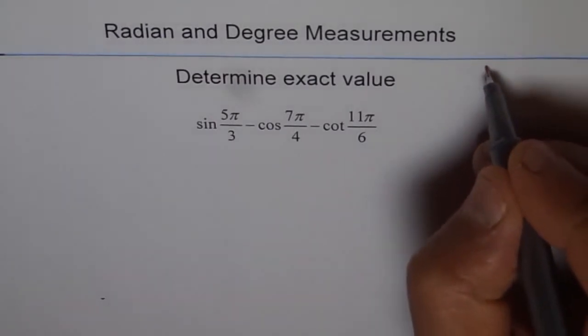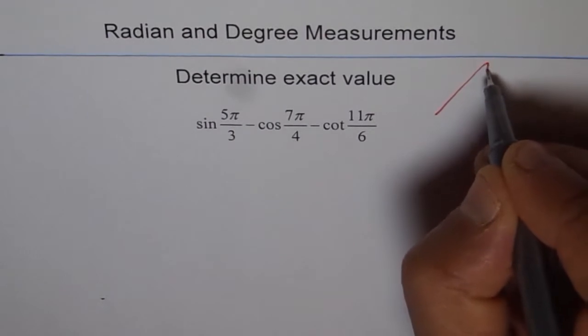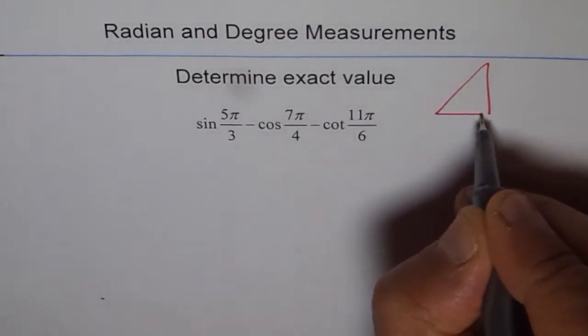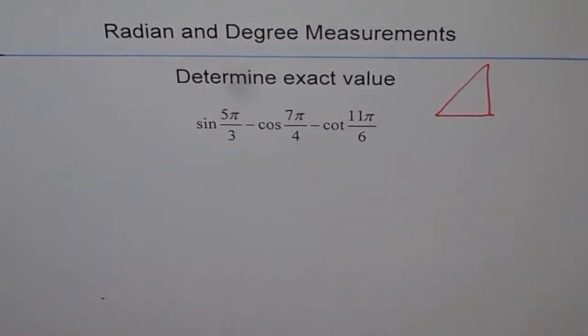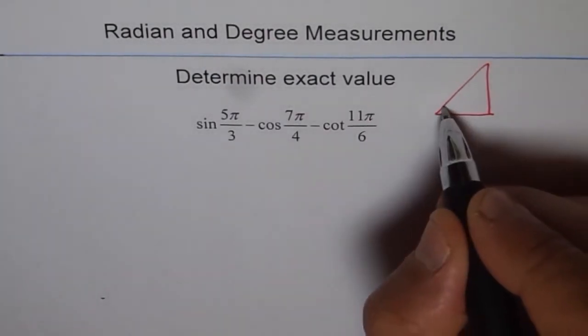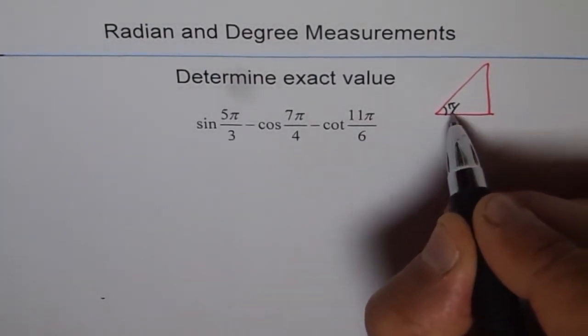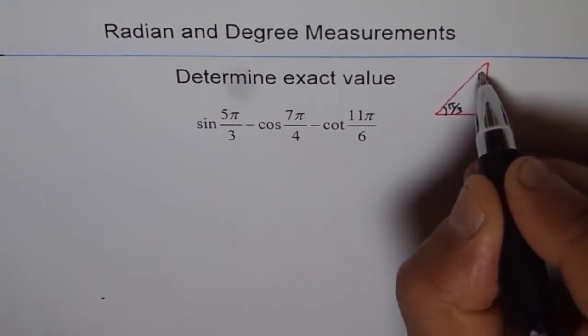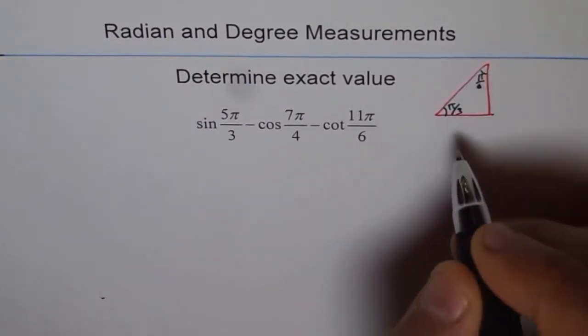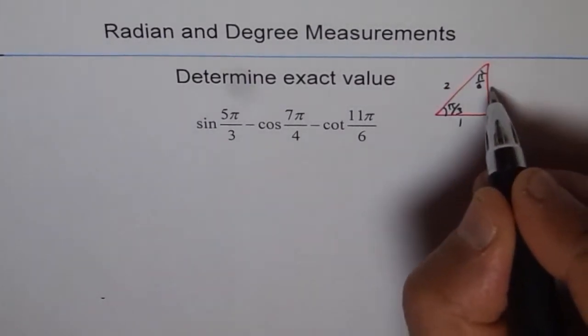Now one of them is the one which has got 60 and 30 degrees. Because we are doing π, we will write π/3 here and π/6 for 30 degrees. And the sides are 1, 2, and square root 3.